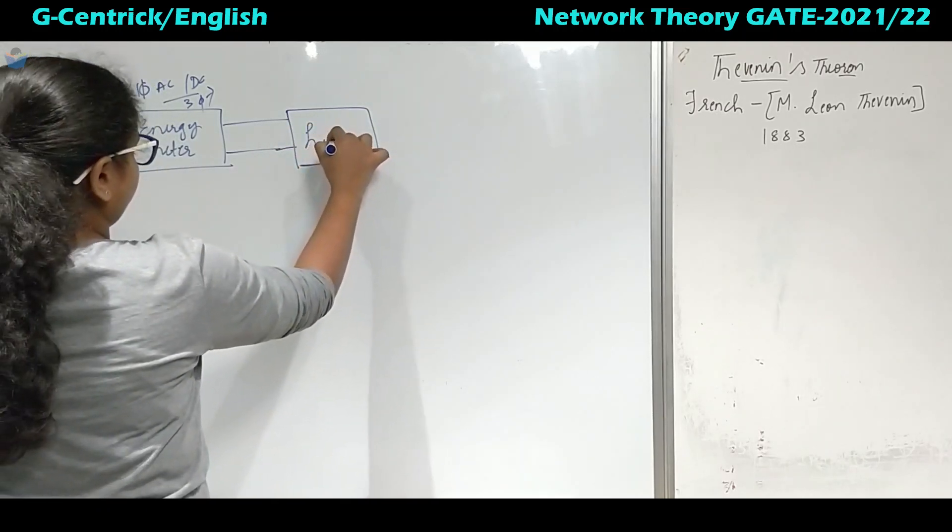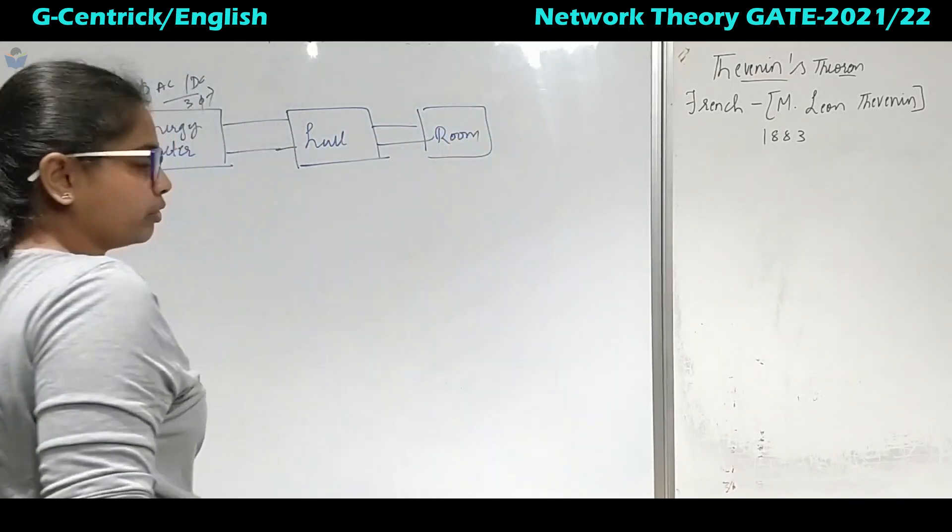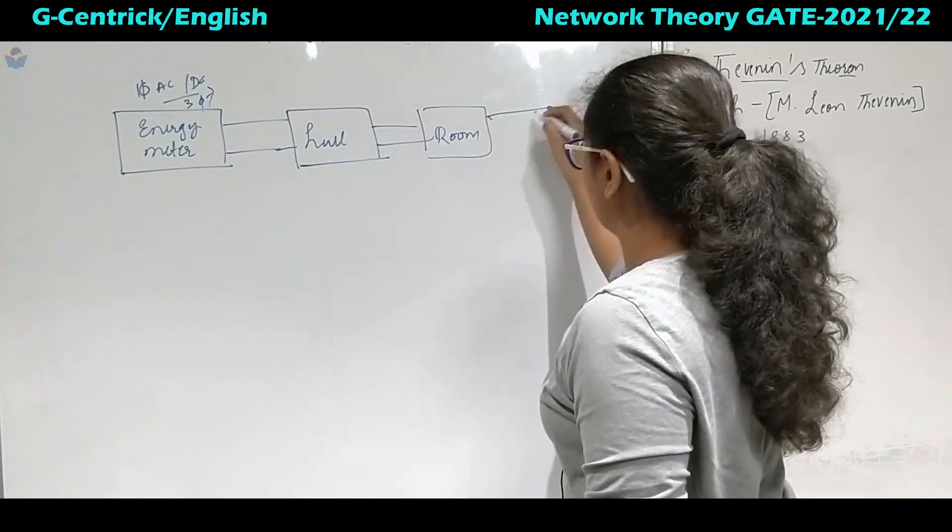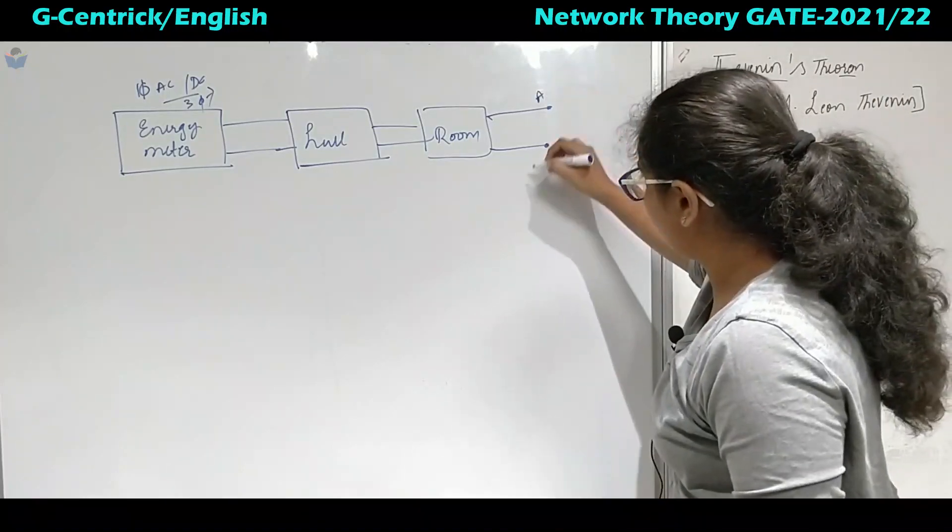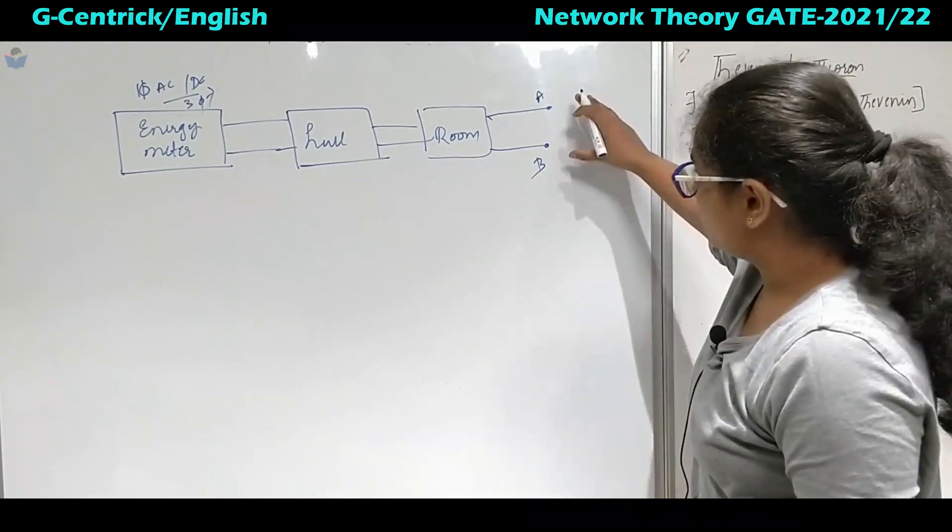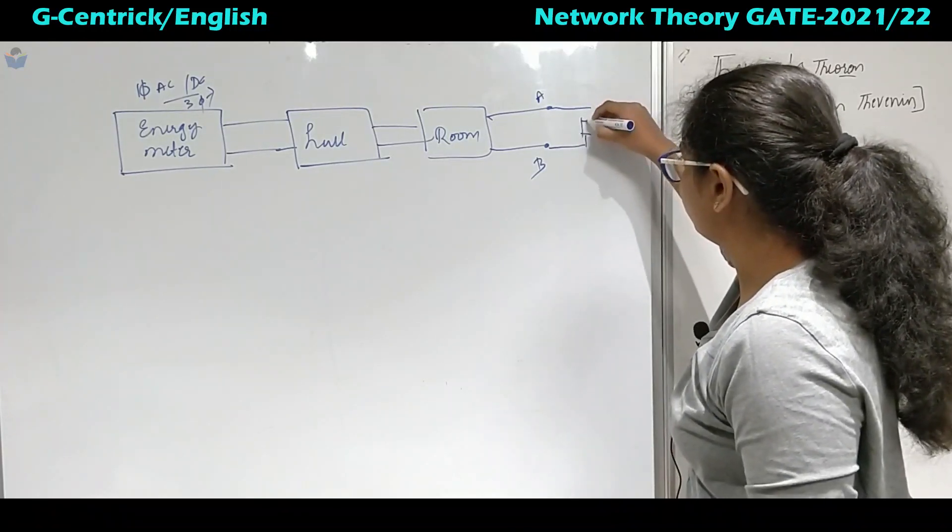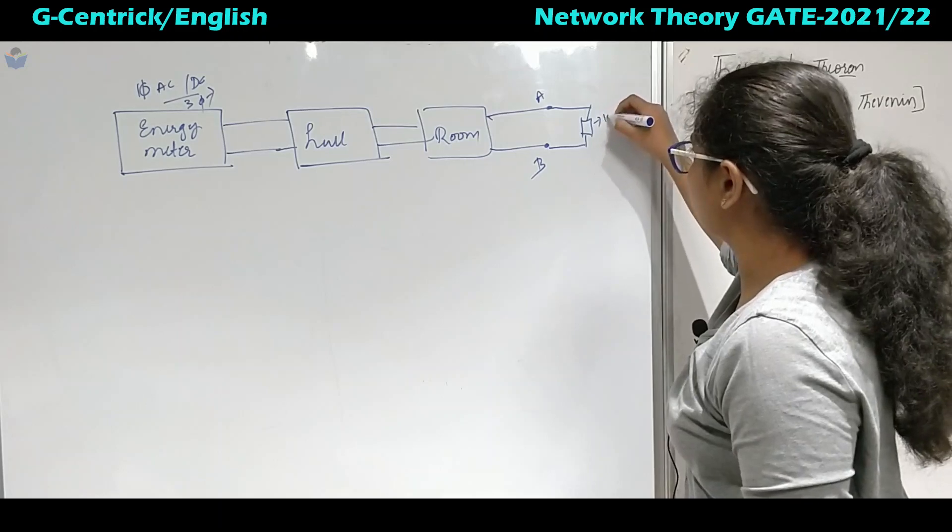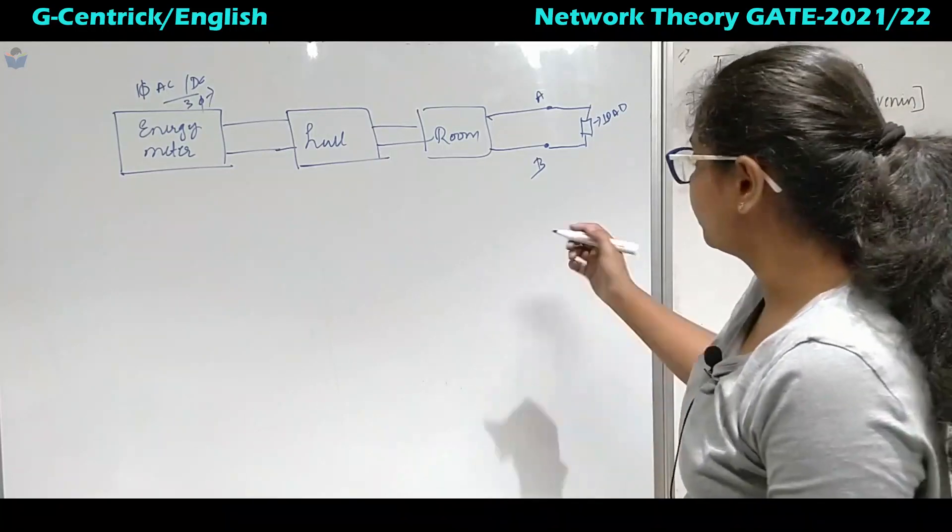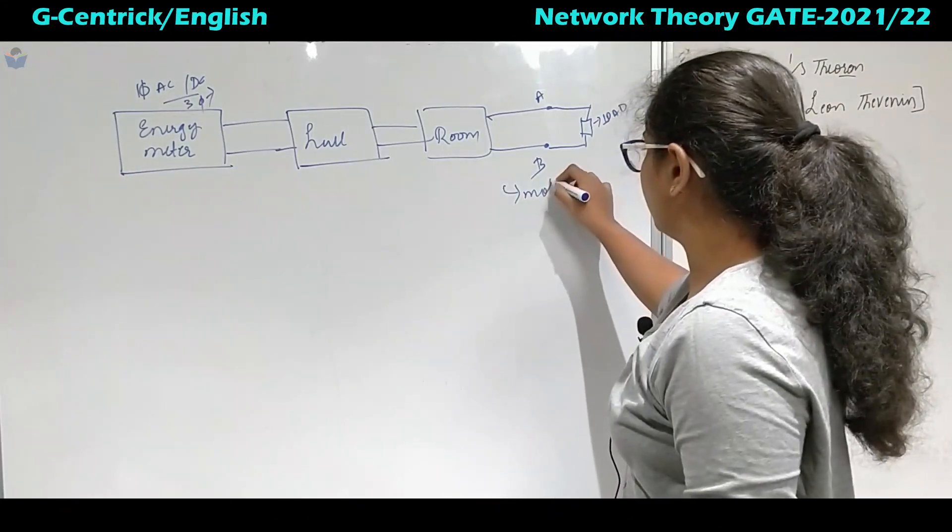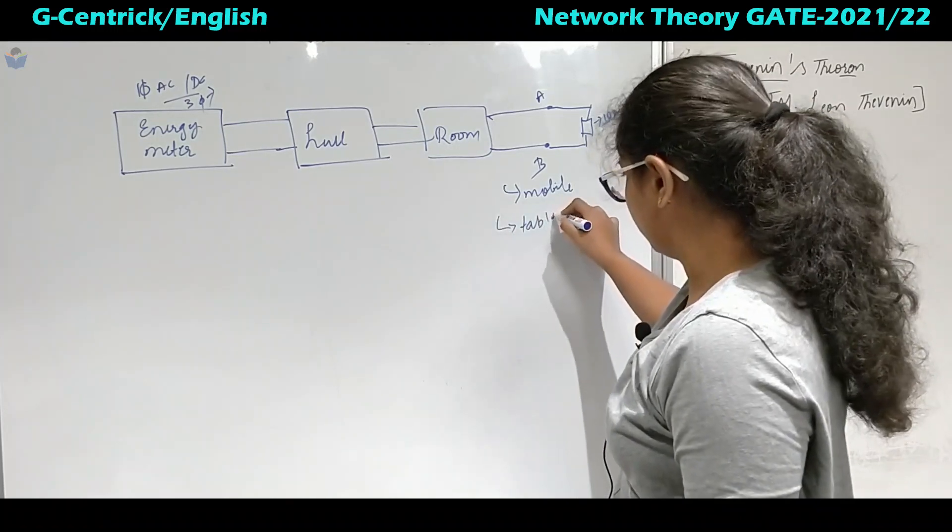Now for this energy meter, the wires are drawn. It may be from hall to room. Till here, we are considering only these two rooms and you have got a socket in this room. This is terminal A and this is terminal B. To this socket you will connect a load. What type of load? It can be either mobile charger, it can be a mobile for charging, then you can have a table fan.